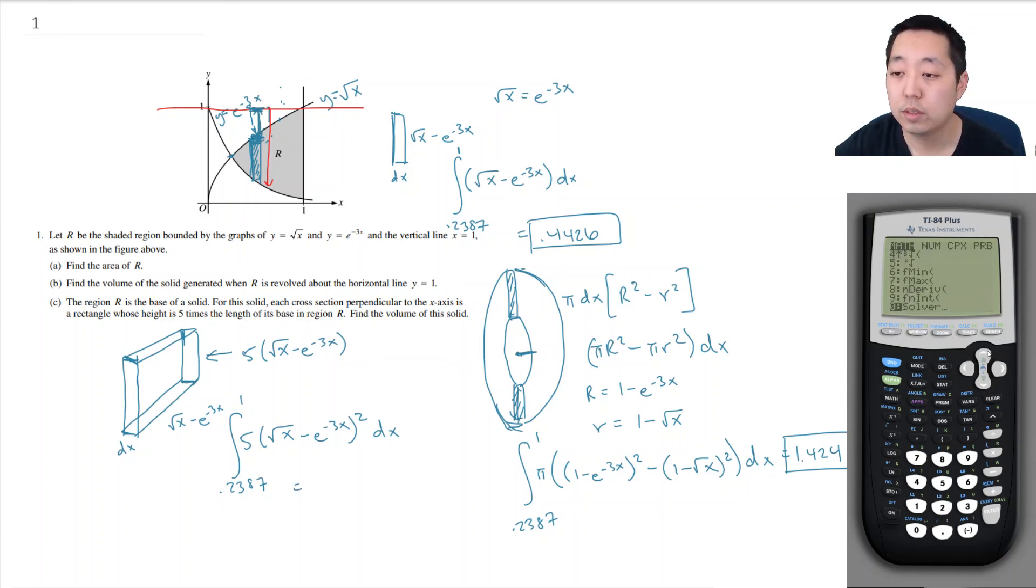So math. These ones take longer because I got to do all this entry in. So we're going to do five times square root of x minus, I need to close parentheses, minus e to the minus three x squared. Integrating over the variable x and we're going from 0.2387 all the way to one. And I get 1.554.